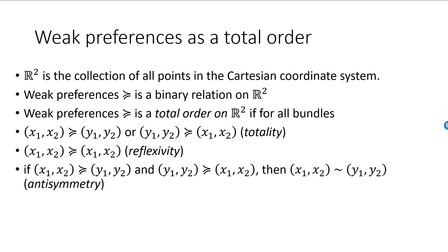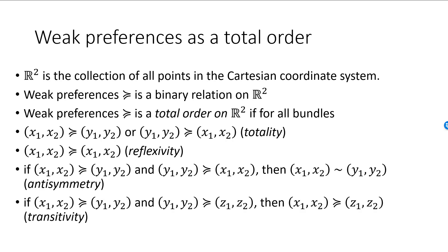Our third condition is antisymmetry. In terms of the weak preference relation, it states that if the first bundle is weakly preferred to the second and the second bundle is weakly preferred to the first, then the consumer must be indifferent between the two bundles — quite reasonable if you think about it. Finally, we have transitivity, which may be a little bit harder to swallow. The weak preference relation is transitive if the following condition always holds: if an individual weakly prefers bundle 1 to bundle 2 and she weakly prefers bundle 2 to bundle 3, then she must also weakly prefer bundle 1 to bundle 3. Simplified to one good: if a consumer prefers an apple to a banana, a banana to an orange, and then claims that she would rather have the orange than the apple, then her preferences are not transitive.